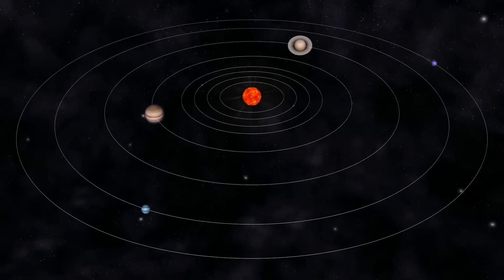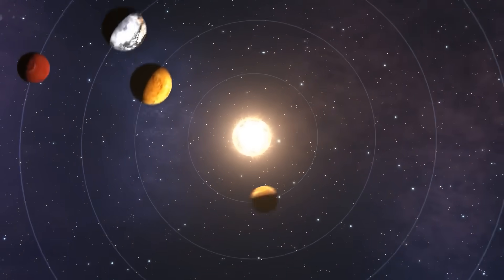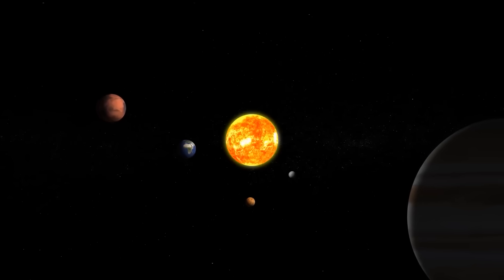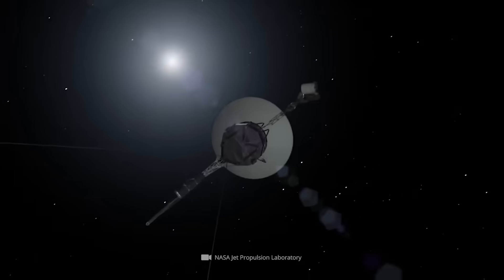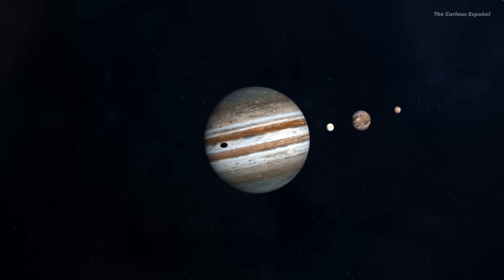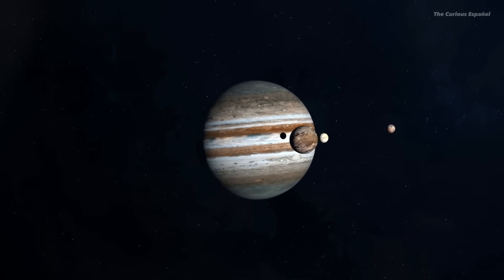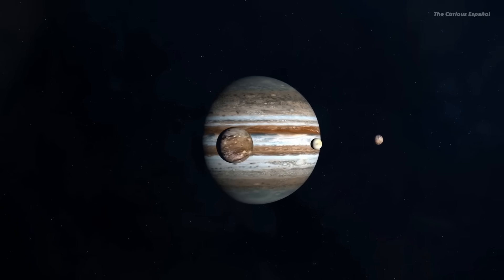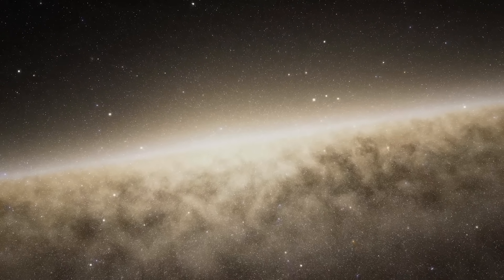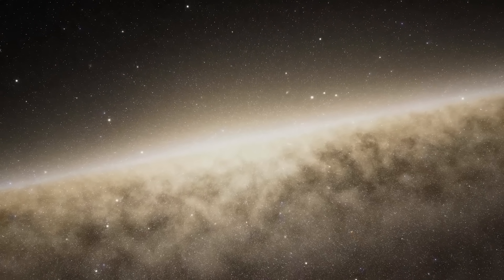Originally designed to take advantage of a rare planetary alignment that occurs only once every 176 years, the mission was meant to perform a grand tour of the outer planets, using the gravitational slingshot effect of Jupiter, Saturn, Uranus, and Neptune. Voyager 1 was tasked with flying by Jupiter and Saturn, capturing the first-ever close-up images of their moons and rings.